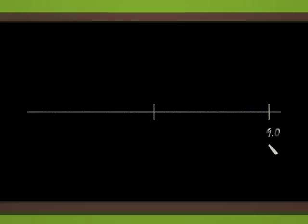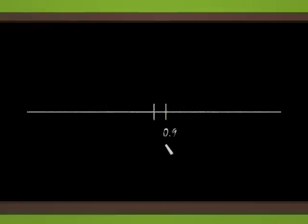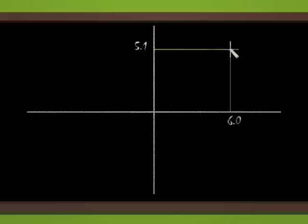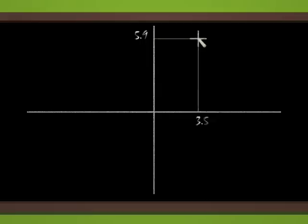Usually the number is denoted by x, and is called the abscissa. Since the position of a point on a line can be described by a single number, we say that the line has dimension one. Now I draw a second axis, perpendicular to the first one. Each point in the blackboard plane is now completely described by two numbers, usually denoted x and y, the abscissa and the ordinate. The plane has dimension two.